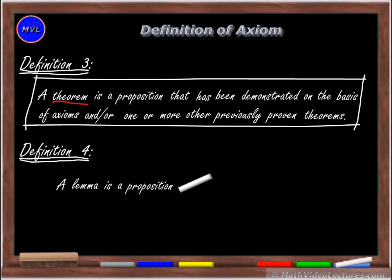A lemma is a proposition that is proven true and then used as a stepping stone during the demonstration of a theorem.